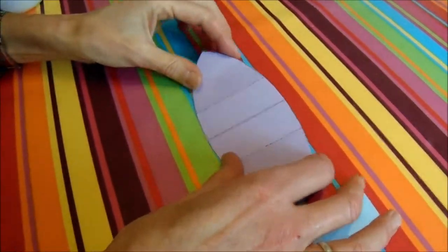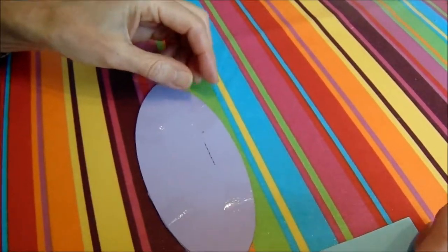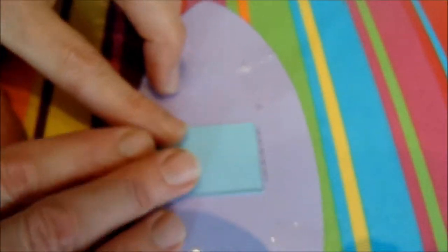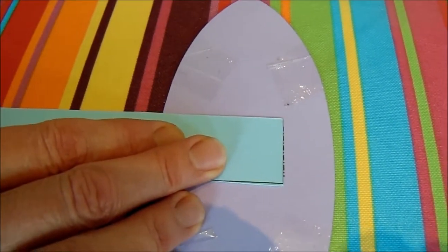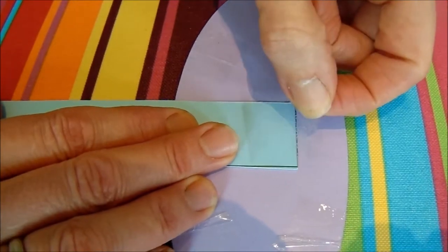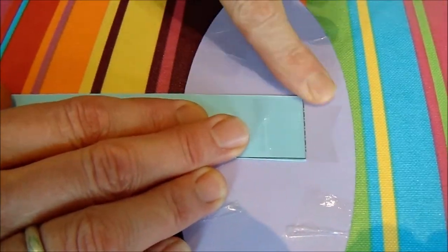You now take strut two and stick it to the other side of the body. You'll see the dotted line there. Line it up with the dotted line. Stick that. You'll see it hangs down below the body.